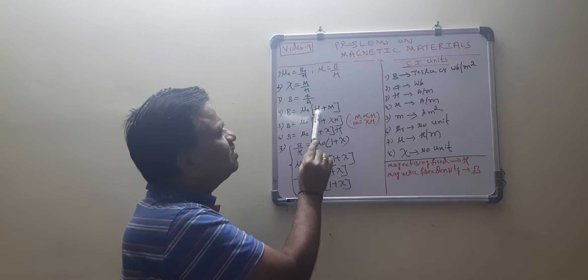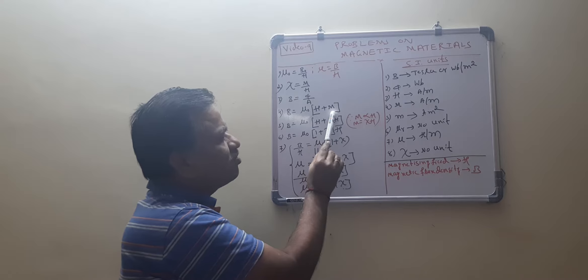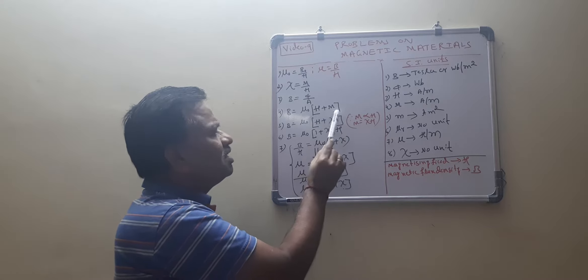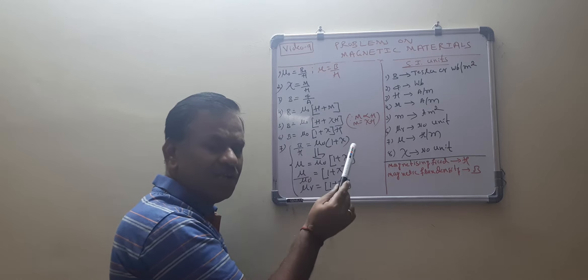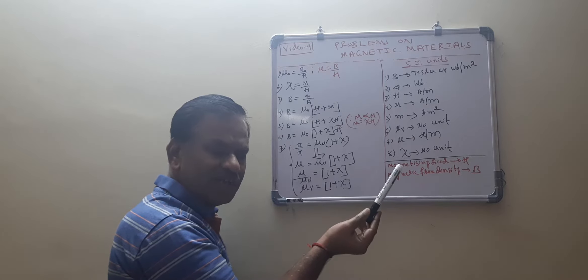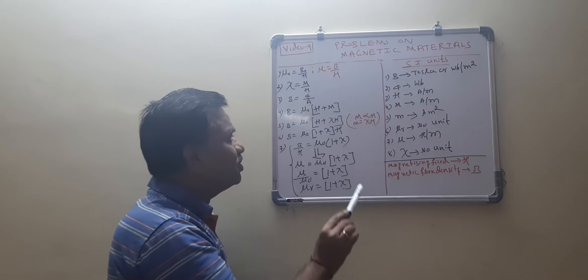Here you see, H and M both we are adding. Whenever there are only like quantities we can add them. Centimeter, meter, meter - length and length, mass and mass we can add it. Like that.